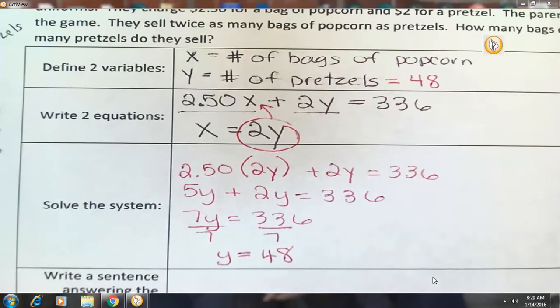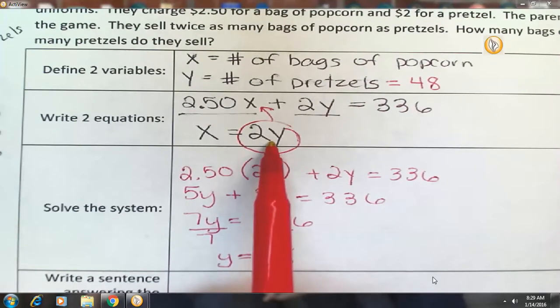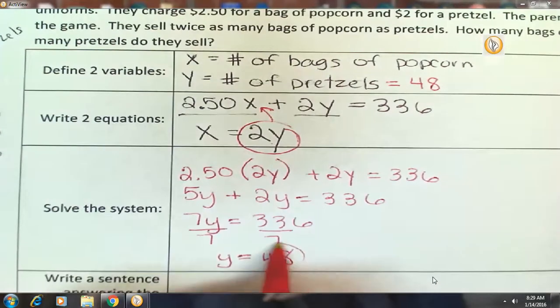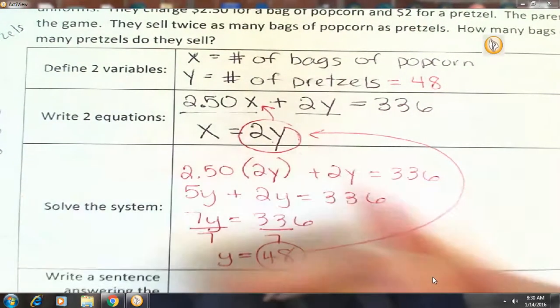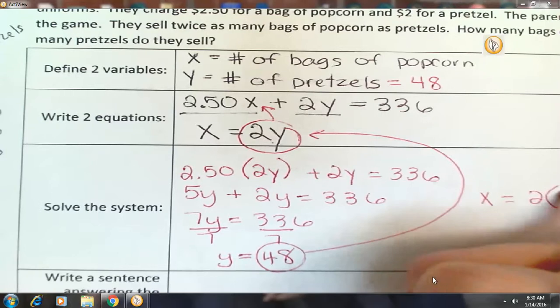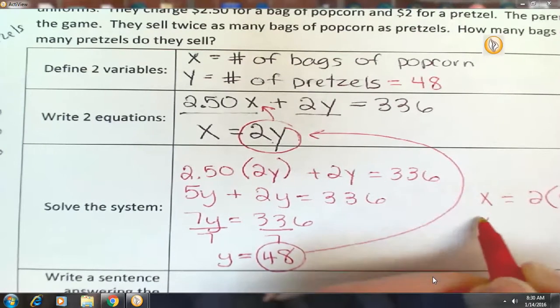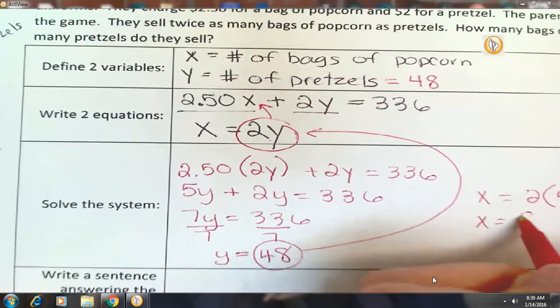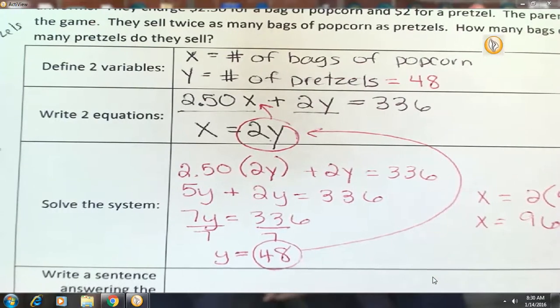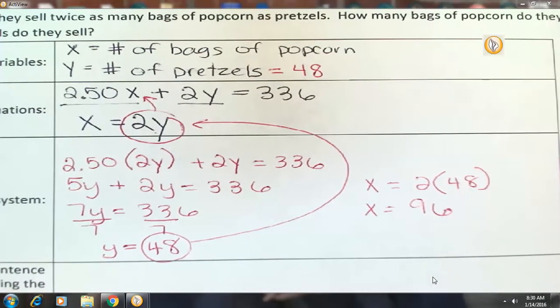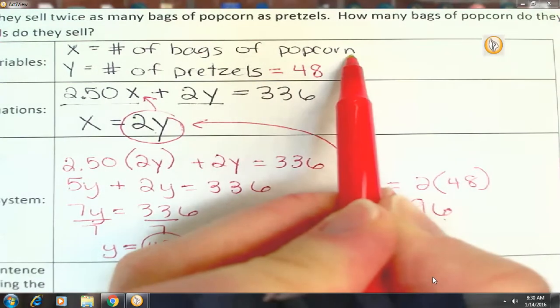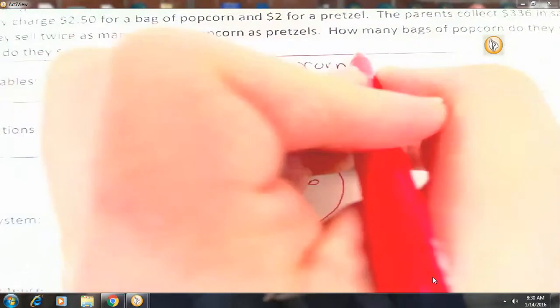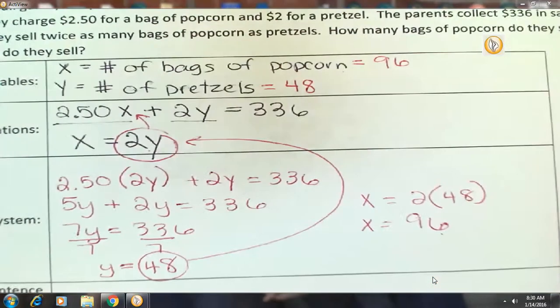So then let's figure out the number of bags of popcorn. Well, we know in order to get the number of bags of popcorn, we just have to double the pretzels, correct? So I'm going to use that equation there. So X equals 2 times 48. 2 times 48 is 96. Does this seem like a reasonable answer? 96 bags of popcorn? Very well could be.